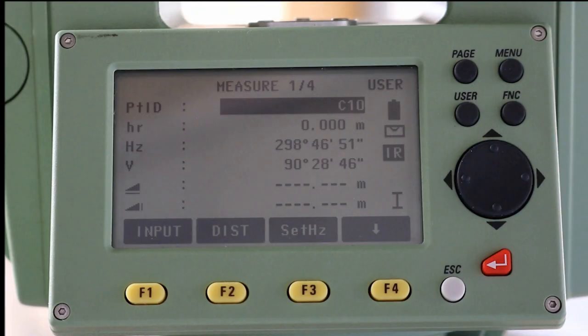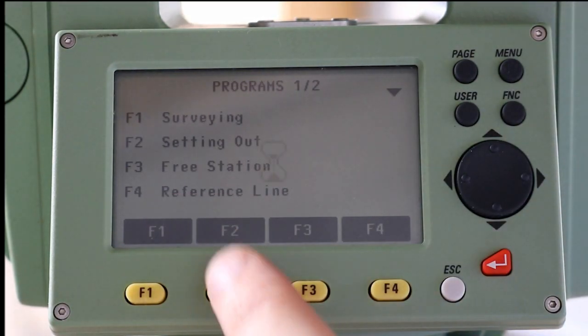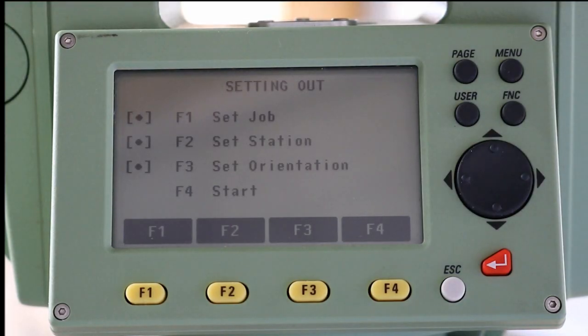To begin setting out, we press the menu button. Then F1 for programs and F2 to enter the setting out mode. The job, station, and orientation are already set, so we can proceed by pressing F4.